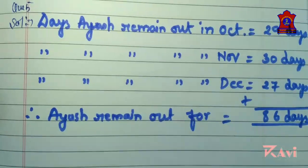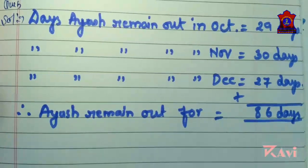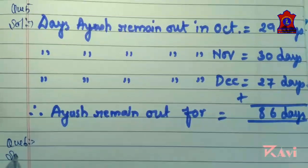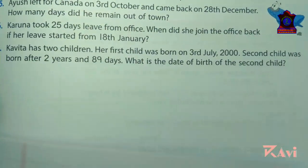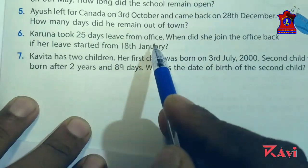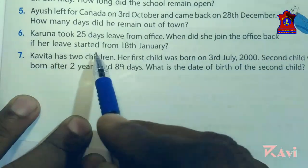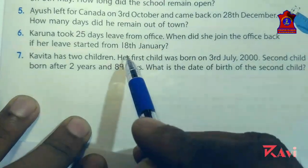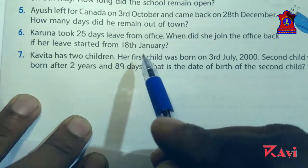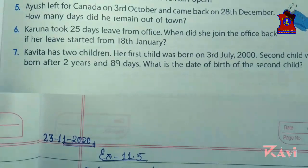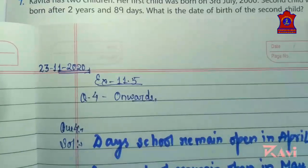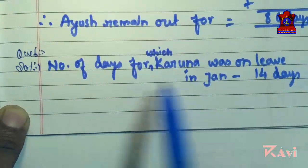Now look at question number 6. Karuna took 25 days leave from office. When did she join the office back if her leave started from 18th January? Leave started from 18th January means Karuna was not on leave on 17th. How many days are there in January? 31. So 31 minus 17 — we have got 14 days in January.